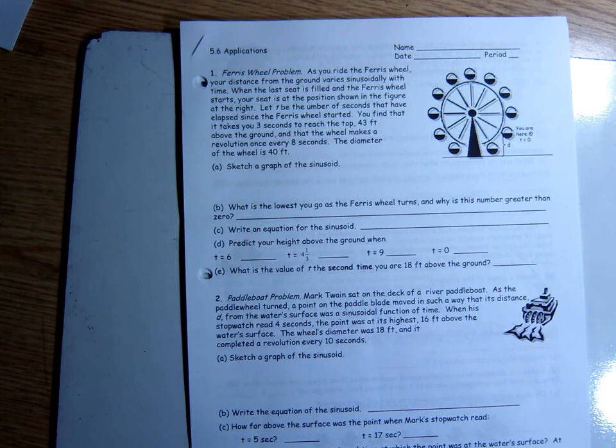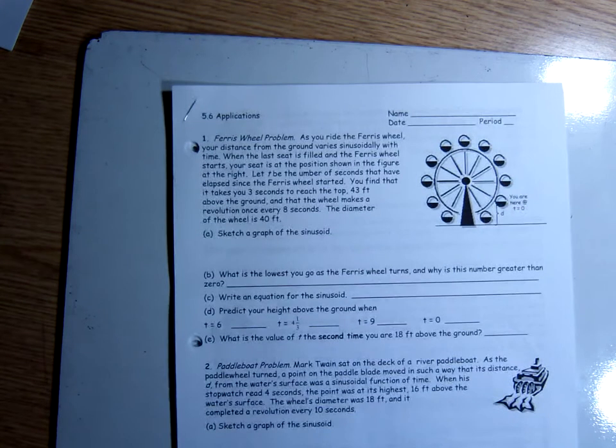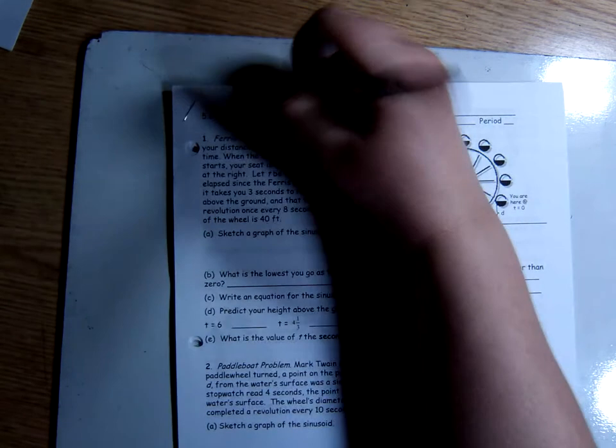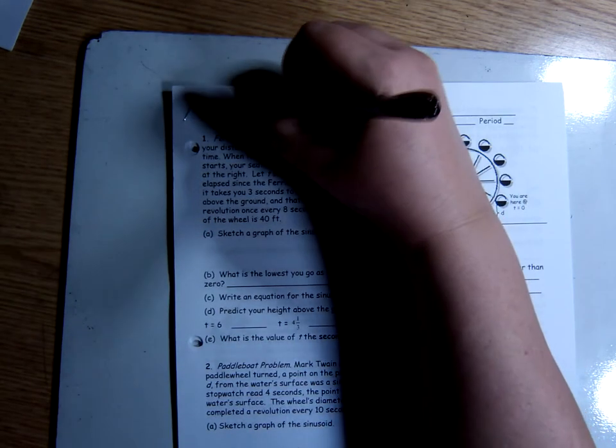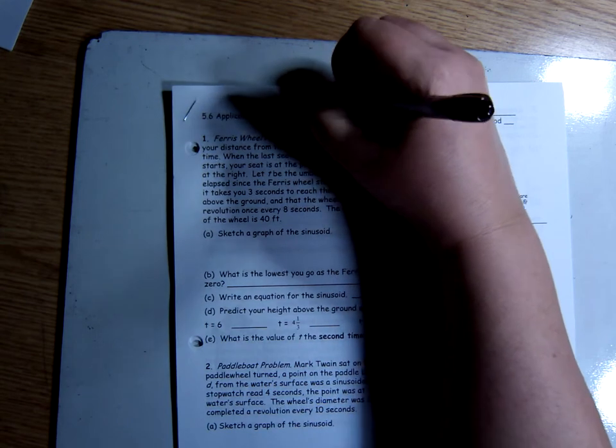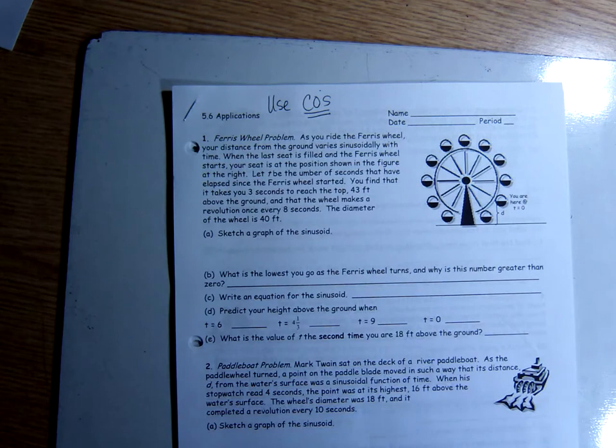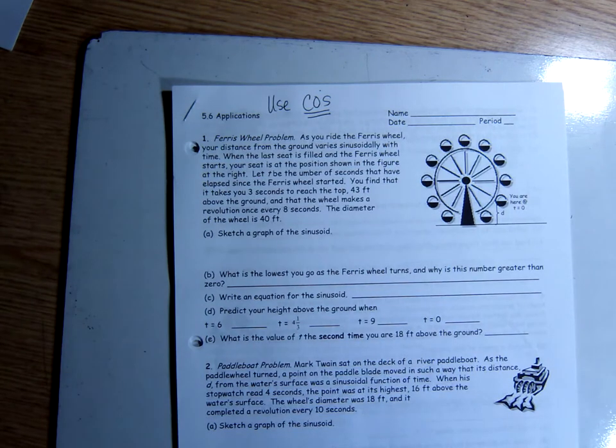One of the things we talked about when we started this today in class was that for our purposes, we are always going to use cosine graphs. The reason it's very often easier to use cosine is that cosine starts at the top or at the bottom, if it's a negative cosine. And it's a little bit easier to tell when things are at their highest point or when things are at their lowest point than when they're right in the middle.